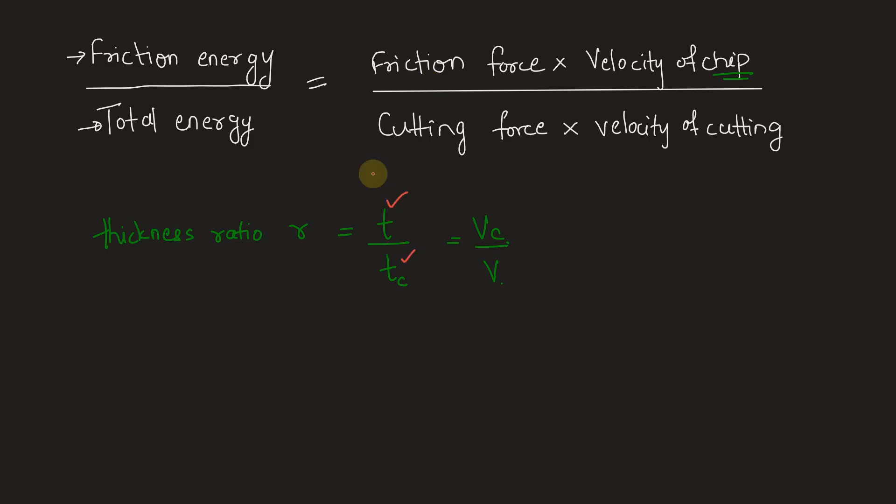Three of these parameters are given, only Vc is not given. So we can find the ratio R and directly put R as this value. This ratio, velocity of chip upon velocity of cutting, is nothing but R.